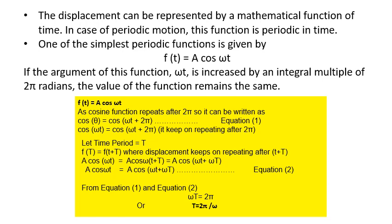f(t) equals A sin omega t. f(t) equals A cos omega t. And as cosine function repeats after 2π, so it can be written as cos theta equals cos(omega t + 2π), which means cos(omega t) equals cos(omega(t) + 2π). It keeps on repeating after 2π.